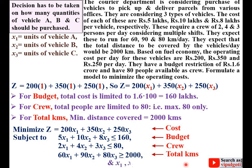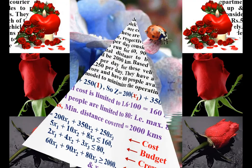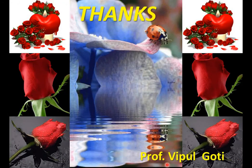And finally, the non-negativity restriction: for vehicles A, B and C, the quantities x1, x2 and x3 must be greater than or equal to 0. That means we can purchase 0 or a positive number of vehicles — the values of x1, x2 and x3 must be 0 or positive. Thanks, dear friends — please press the like button to appreciate this video.